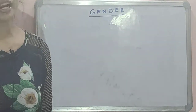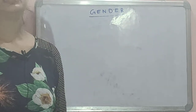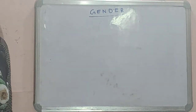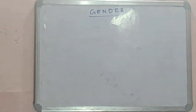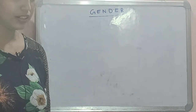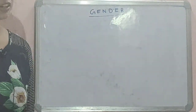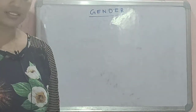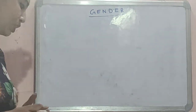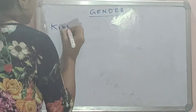Hi guys, welcome to our channel Last Night Study. Today we are going to study about gender. Gender is also a type of noun. Gender indicates whether a person or animal is male or female. The word gender has been originated from the Latin word 'genus', which means a kind or sort. So firstly we have to know the kinds of gender.